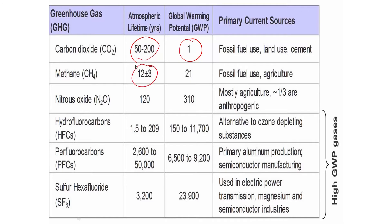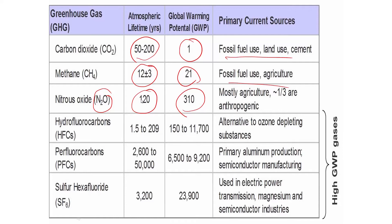Methane has a much shorter residence time and is highly oxidizable, but it is 21 times more powerful as a greenhouse gas than carbon dioxide. Nitrous oxide has a long timescale and is tremendously powerful as a greenhouse gas. This matters because once you put these gases into the air they can stay there for a long, long time. Even if we suddenly wise up and stop all the pollution, our children, grandchildren, and great-grandchildren will all be experiencing continued warming as these gases keep creating global warming into the future.